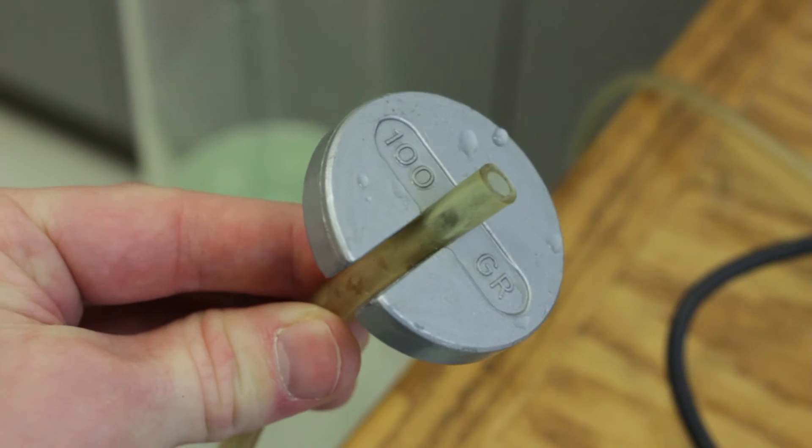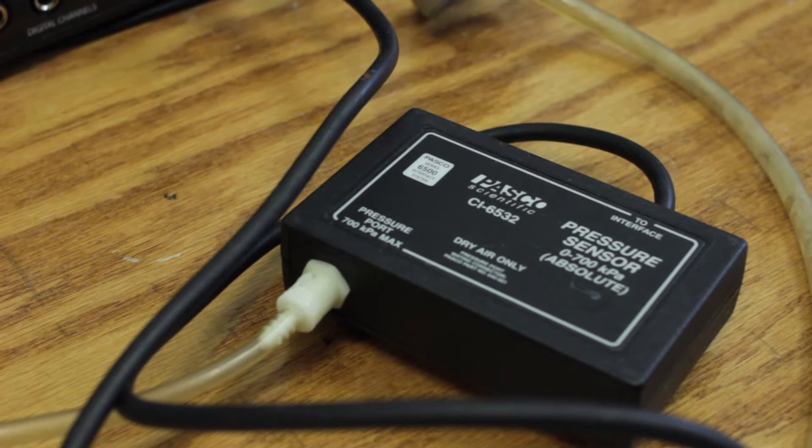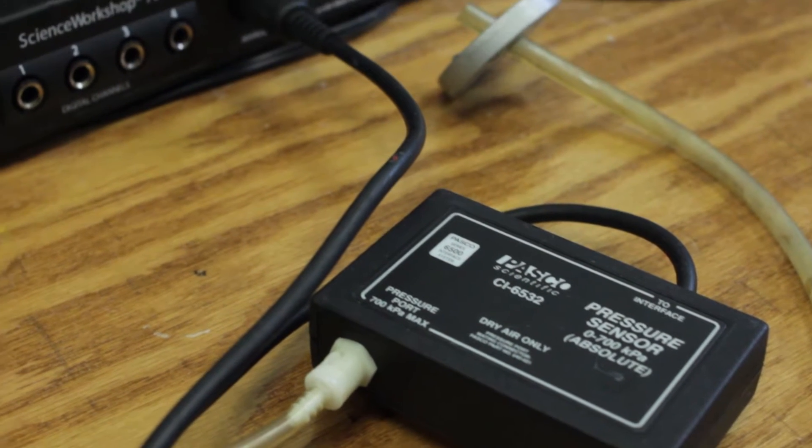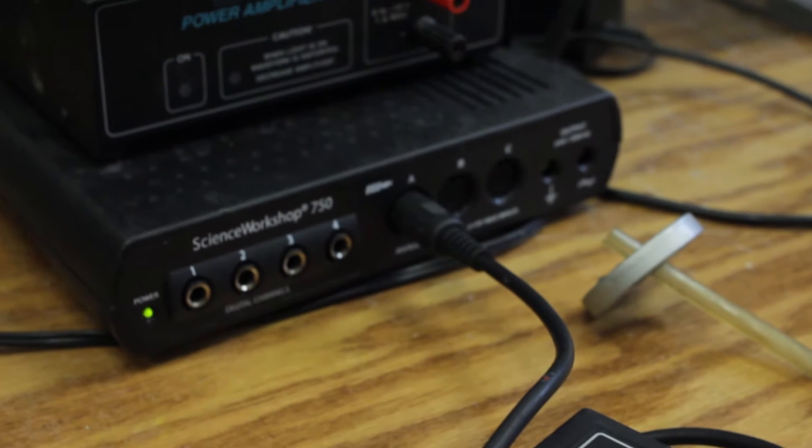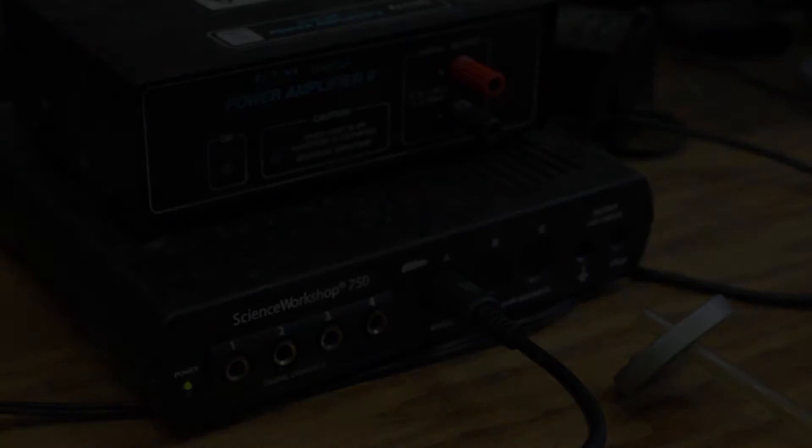Note that the pressure reading in air, atmospheric pressure, is 99.1 kilopascals. Normal atmospheric pressure is 101 kilopascals, but the sensor also effectively functions as a barometer and a low pressure weather system was moving through on the day this video was shot.